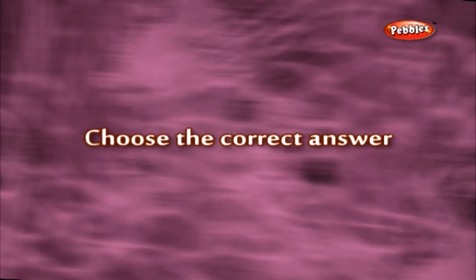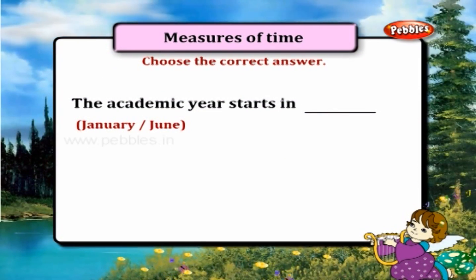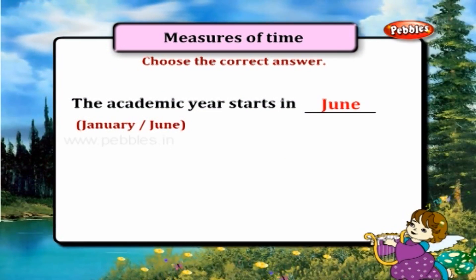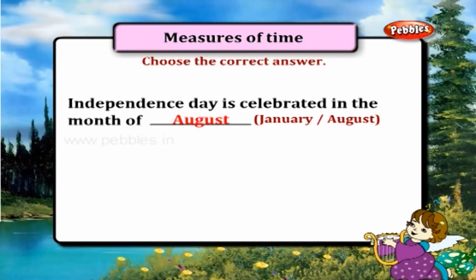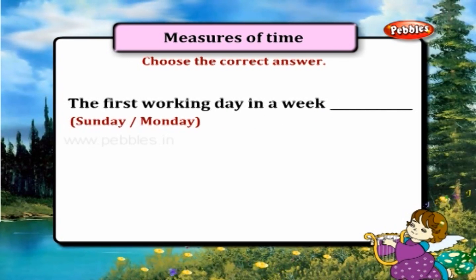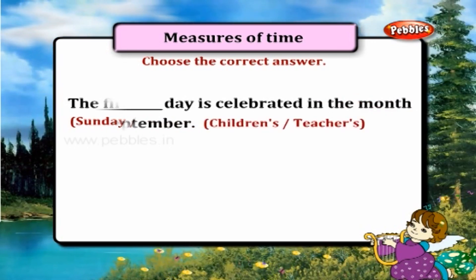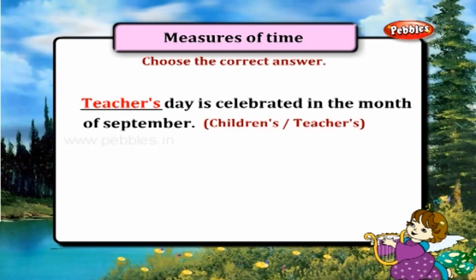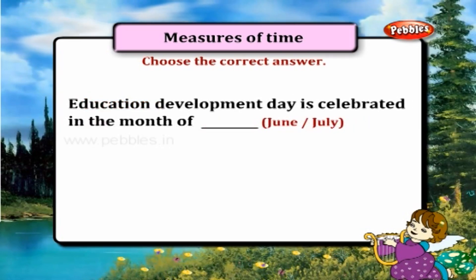Choose the correct answer. The academic year starts in June. Independence Day is celebrated in the month of August. The first working day in a week is Monday. Teacher's Day is celebrated in the month of September. Education Development Day is celebrated in the month of July.